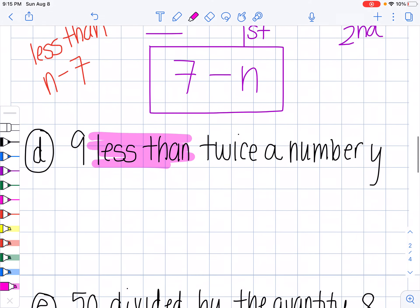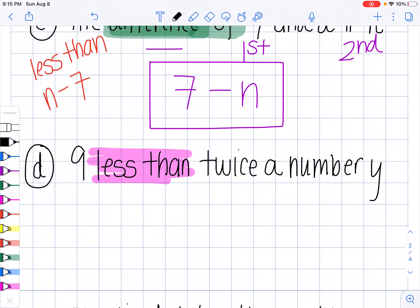So this one's a little bit trickier because we're talking about, so here's this part right here. This isn't easy to decode because it's just a number. Nine less than means I'm going to be using subtraction. I need to write twice a number Y. So twice means is the number two. And twice a number Y means I'm actually multiplying those together.